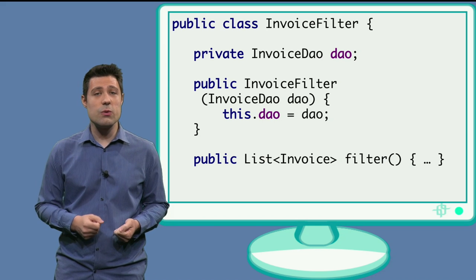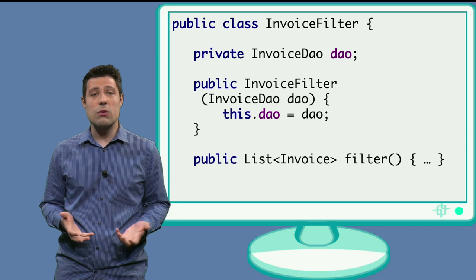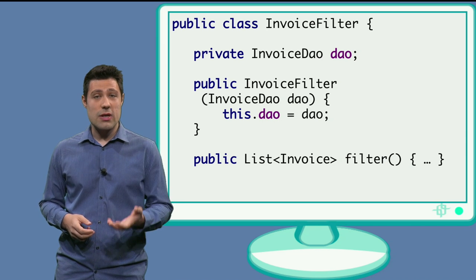A common way to do so is to receive the class we will mock as a parameter of the class. And we usually do it in the constructor. So, as you can see in this code, the invoice filter class now has a constructor receiving the database object.